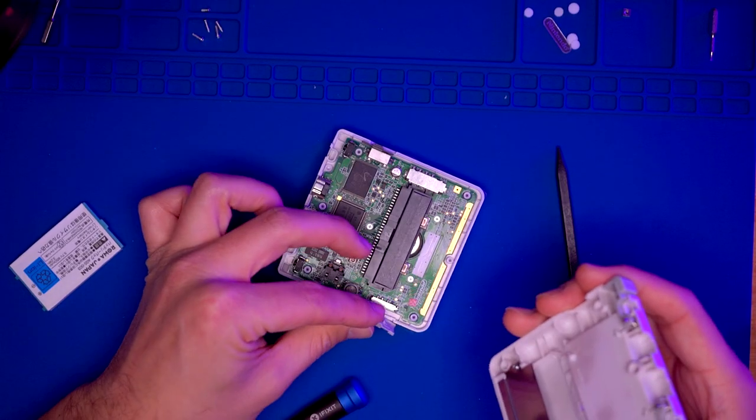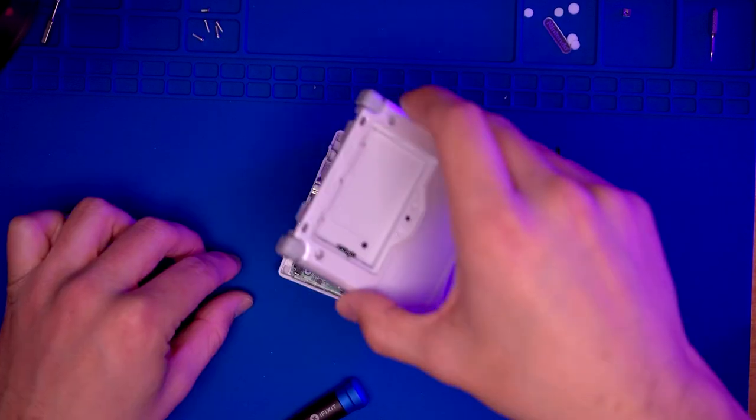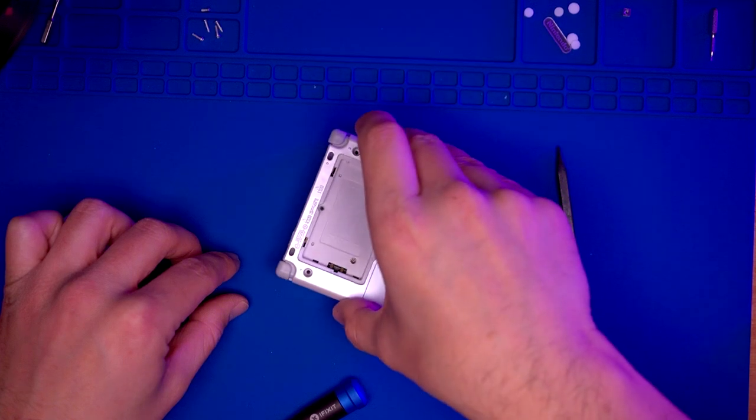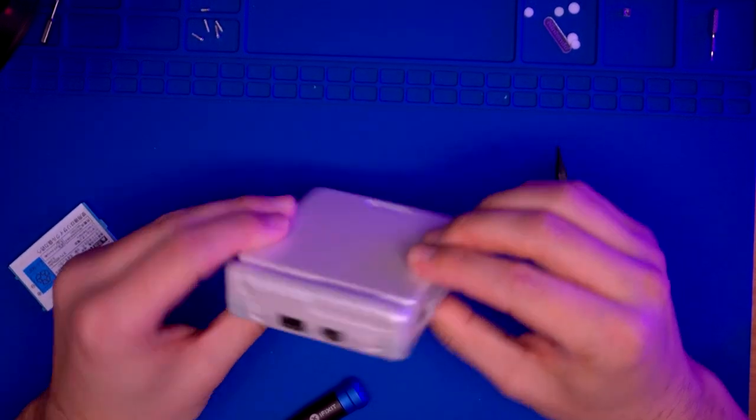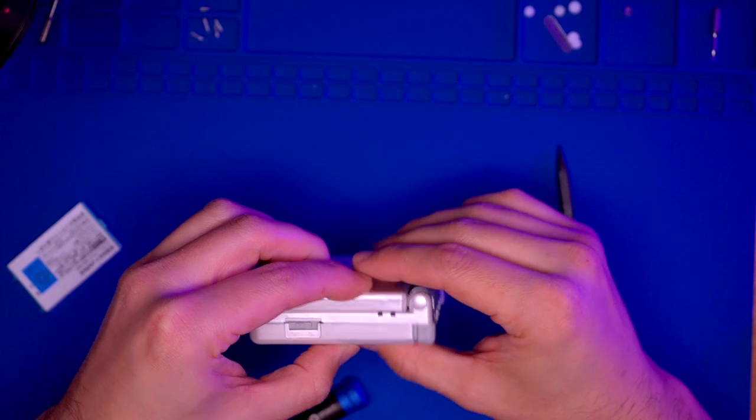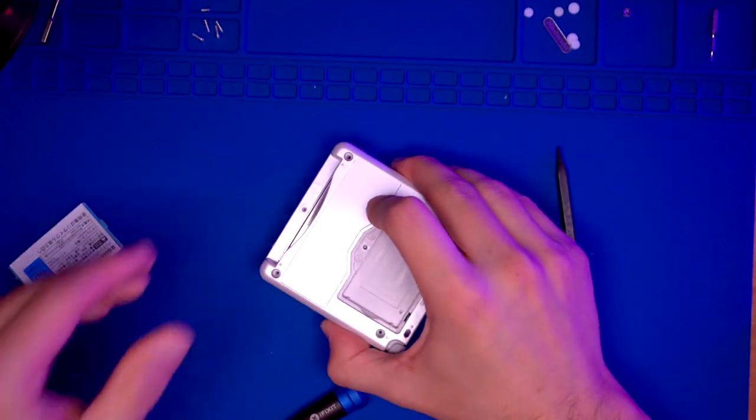Now we're going to put the nut for the screw which closes the battery compartment door. That just press fits right in. Make sure you don't forget that otherwise you won't be able to close your battery door.